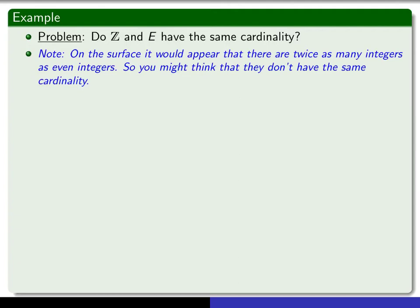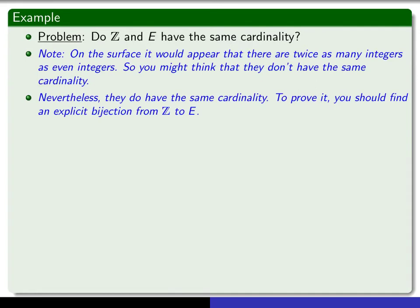There seem to be about twice as many integers as there are even integers. But you'd be wrong if you argue just in terms of intuition. In fact, they do have the same cardinality, and in order to prove it, you have to find an explicit bijection from the set of integers into the set of even integers.